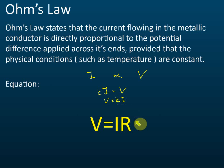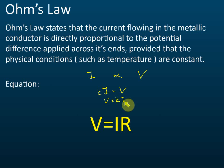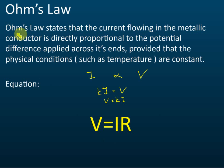Later on we will discuss that we define K as resistance. So therefore the equation becomes V equals IR. This is V equals Ki, but since K is defined as resistance R, the formula becomes V equals IR.